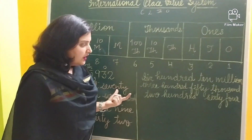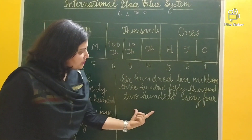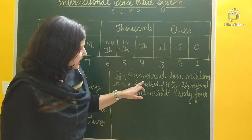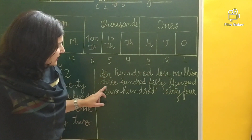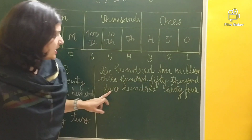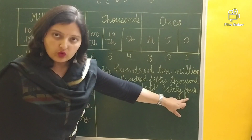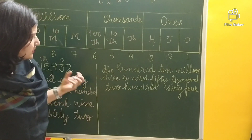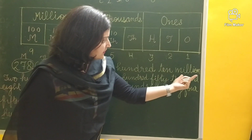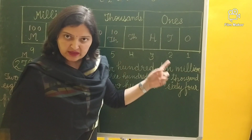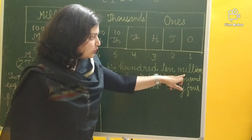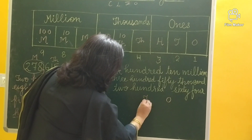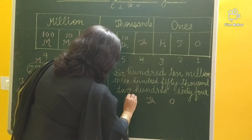Now we will learn how to write the numeral of a number given in words. Take the number 610,350,264. Whenever you see the number, read it and look at the period. This number goes up to millions, meaning we have 3 different periods: ones, thousands, and millions.